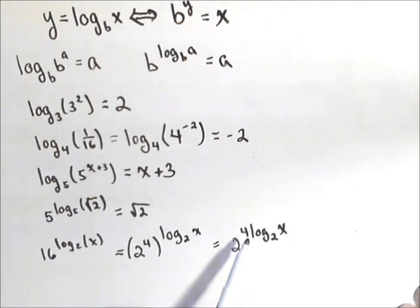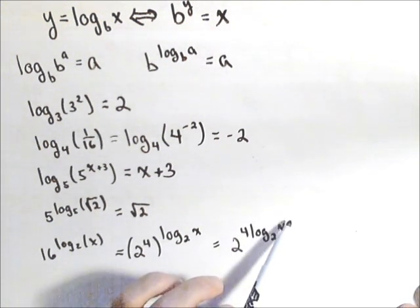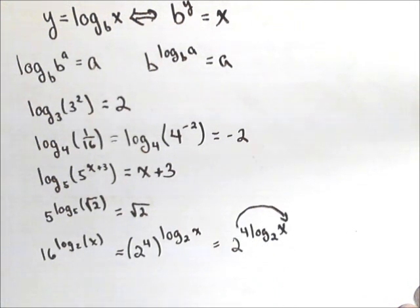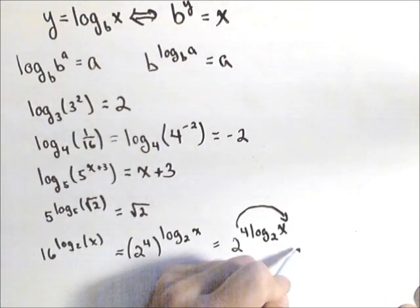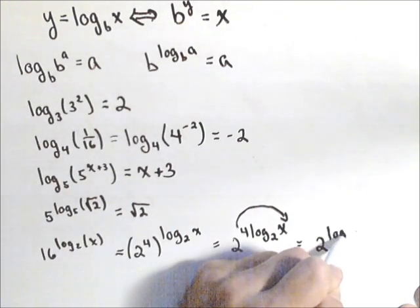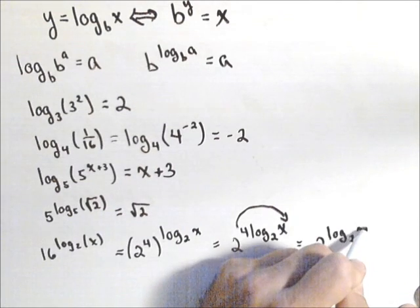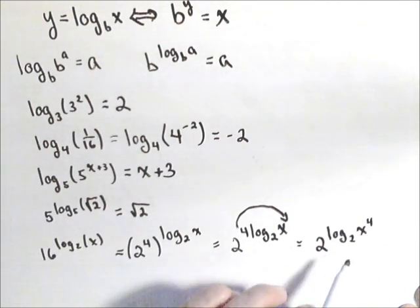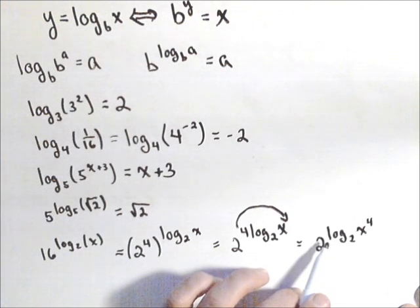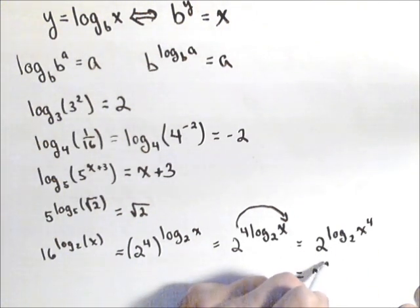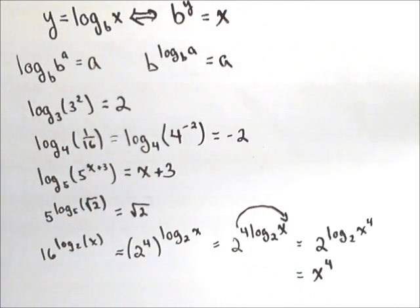This is four out front. But remember, we have a property of logs that allows us to pull the exponent out front. We're gonna go to the reverse on that property and put it in as an exponent. So, this is now gonna be rewritten as two log base two of x to the fourth. Now, we have the same bases. There's nothing in between. So, this is equal to x to the fourth. So, we ended on kind of a tricky example there.